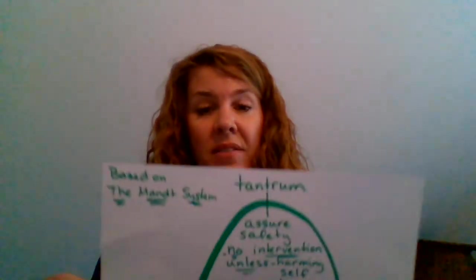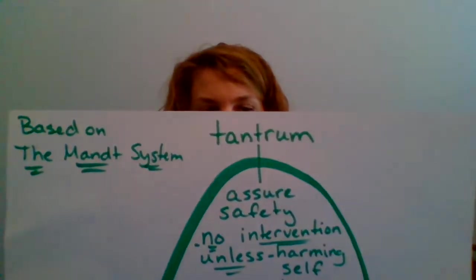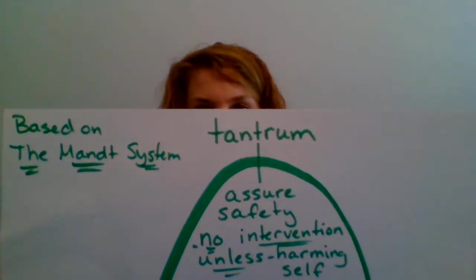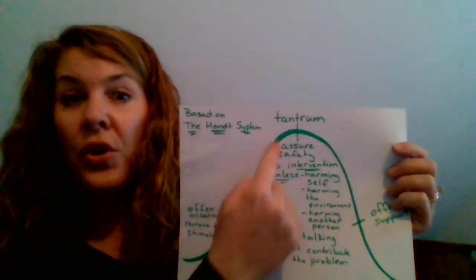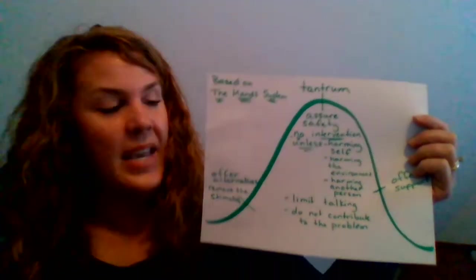This little curve that I'm going to show is based on the MANT system of philosophies. So with this, you're going to note that there is a curve, and it tells you about the tantrum.